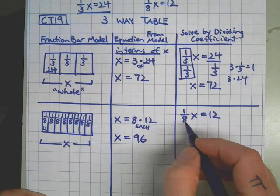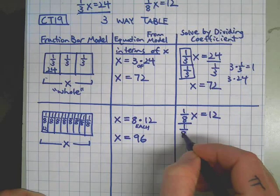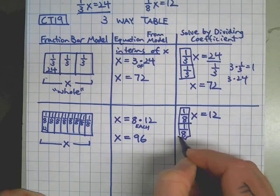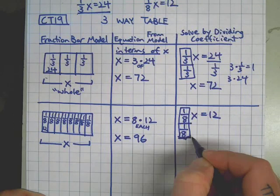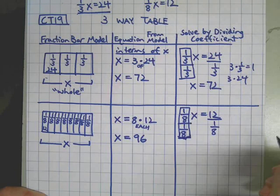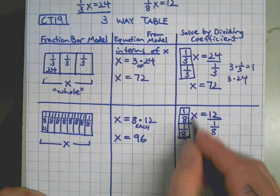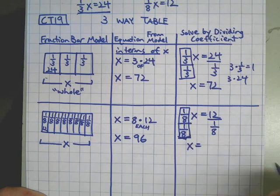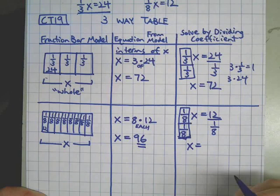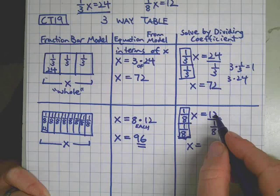And finally, to solve by dividing the coefficient. How many one-eighths fit into one-eighth? You are right. One. That is an ugly one, but it still works. We love all of them. Remember to do the same thing to both sides. Then our question is, since we know this is one x over here, I bet you can guess that it's going to be 96. I know you're thinking that, but let's make sure.